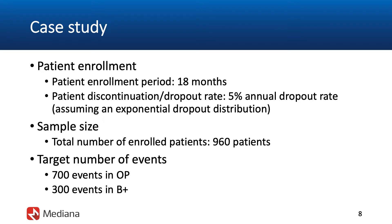Let me add a few additional details about this case study, including enrollment information and treatment effect assumptions. The length of the patient enrollment period is assumed to be 18 months, and the patient discontinuation rate is defined on an annual basis — five percent of patients are assumed to be lost to follow-up annually. We assume that the time to patient discontinuation follows an exponential distribution. The sample size, specifically the total number of enrolled patients, is set at 960 patients, and we also need to define the target number of events for two different objectives in this trial.